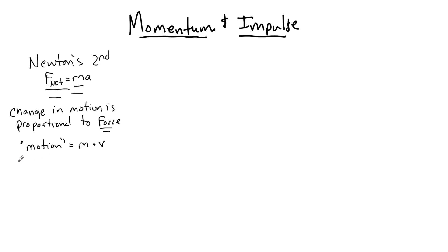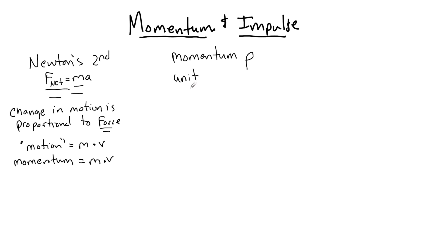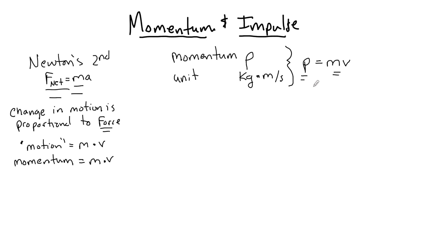The product of mass and velocity he called motion, which is momentum, and that created the momentum formula. The symbol for momentum is a lowercase p, and its unit comes from the product of kilograms times meters per second — there is no derived unit. So the formula for momentum is p equals mv.